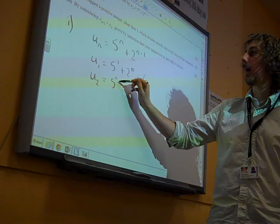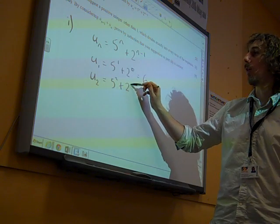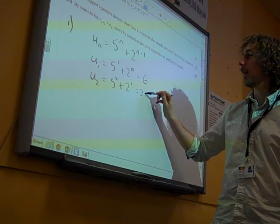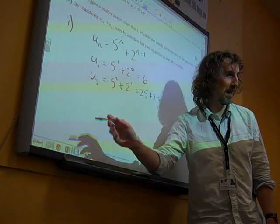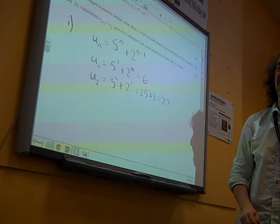So u2 would be 5 squared plus 2 to the 1, so that's 25 plus 2, so that's 27. Now, we found u2, but we still haven't found what we're looking for.